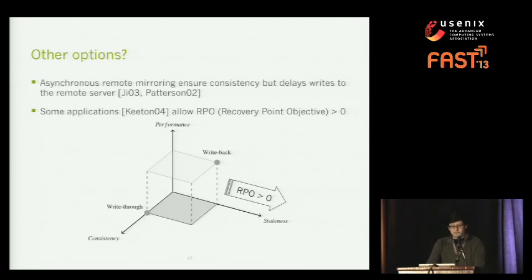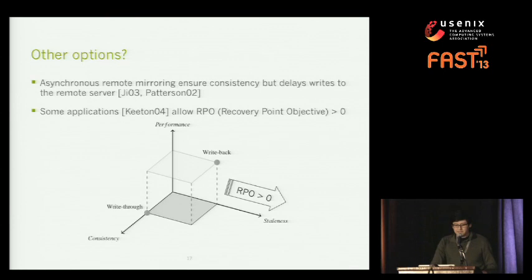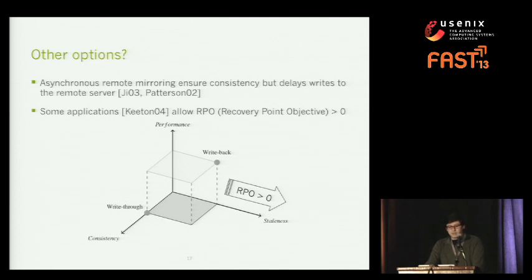In this vast spectrum, we looked for other options and couldn't find them in the caching literature. Interestingly, we found a similar problem and solution in the field of asynchronous remote mirroring, where writes are delayed to make better use of network bandwidth at the cost of having RPOs higher than zero. A study by Keaton showed that many applications can tolerate staleness — for example, mail servers, virtual desktops, and social network data servers.